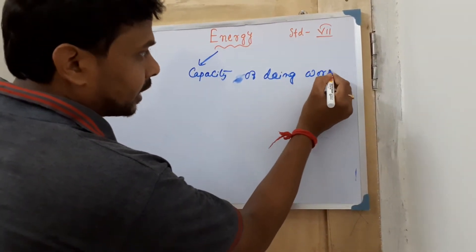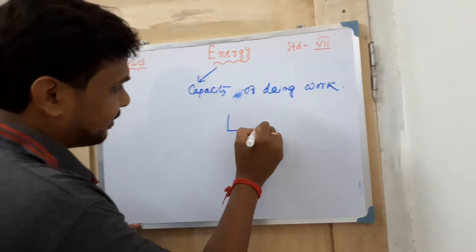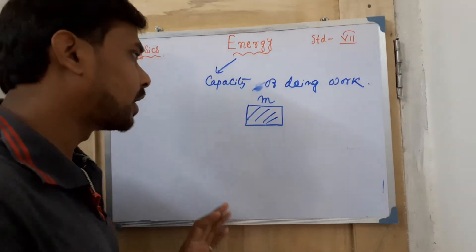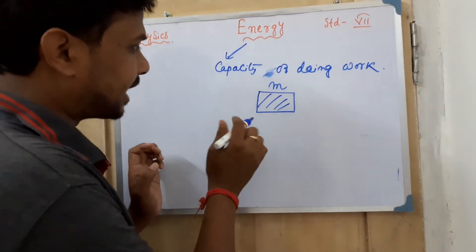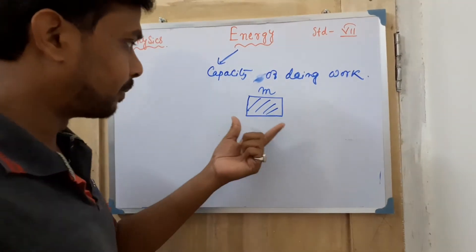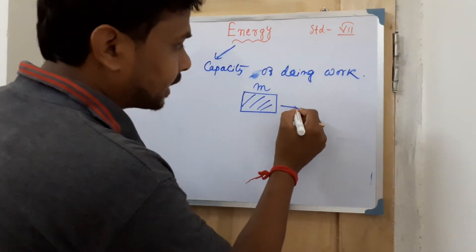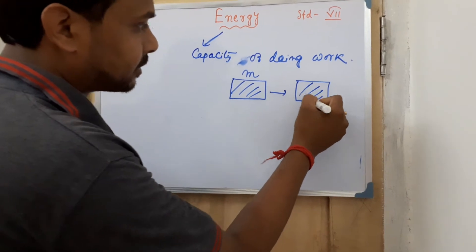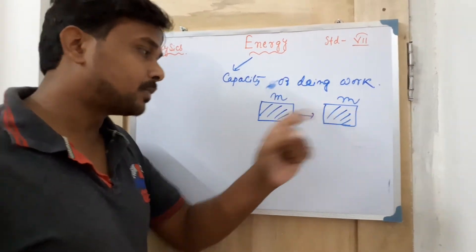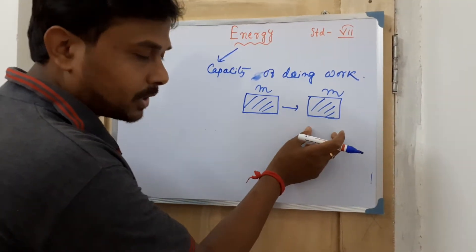Suppose a mass is kept in a particular place. Now one person came and tried to push that mass but was unable to shift it from one place to another. Then you came and pushed it, and that particular body was displaced by some amount. In this case, we say the first person has not done any work, but you have done work, because you gave displacement to the body.